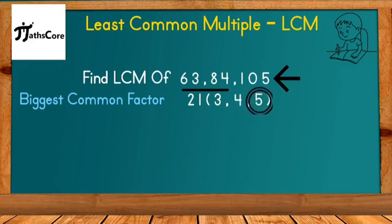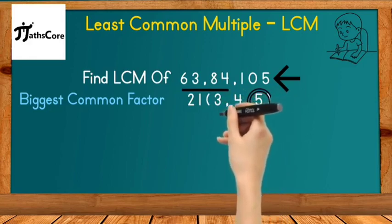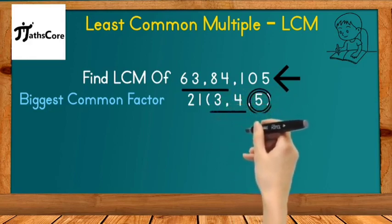So we got 3 terms: 3, 4, and 5. Now we check if the biggest number is a multiple of the remaining two numbers.